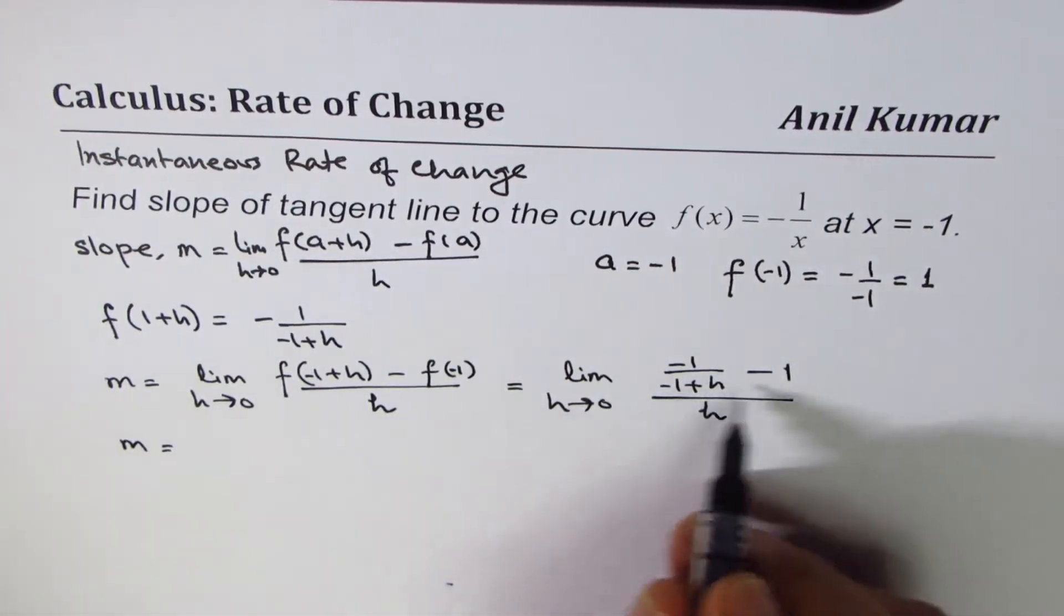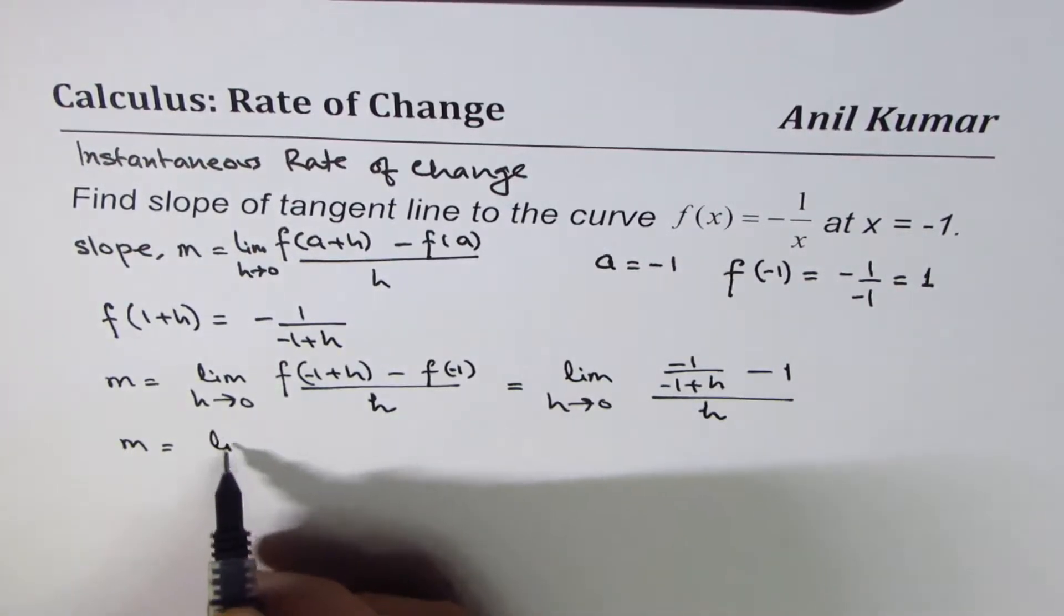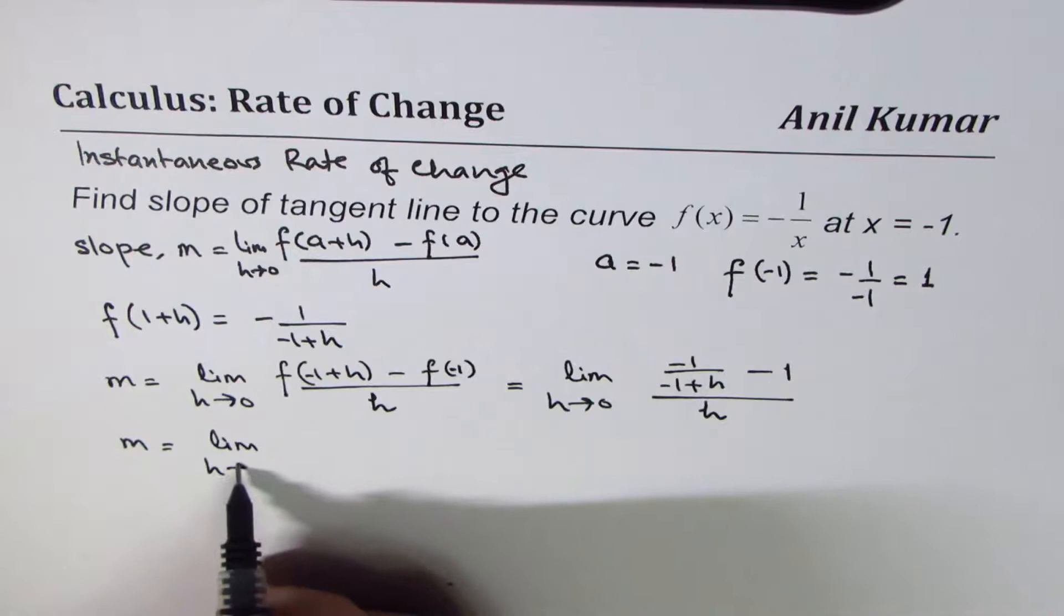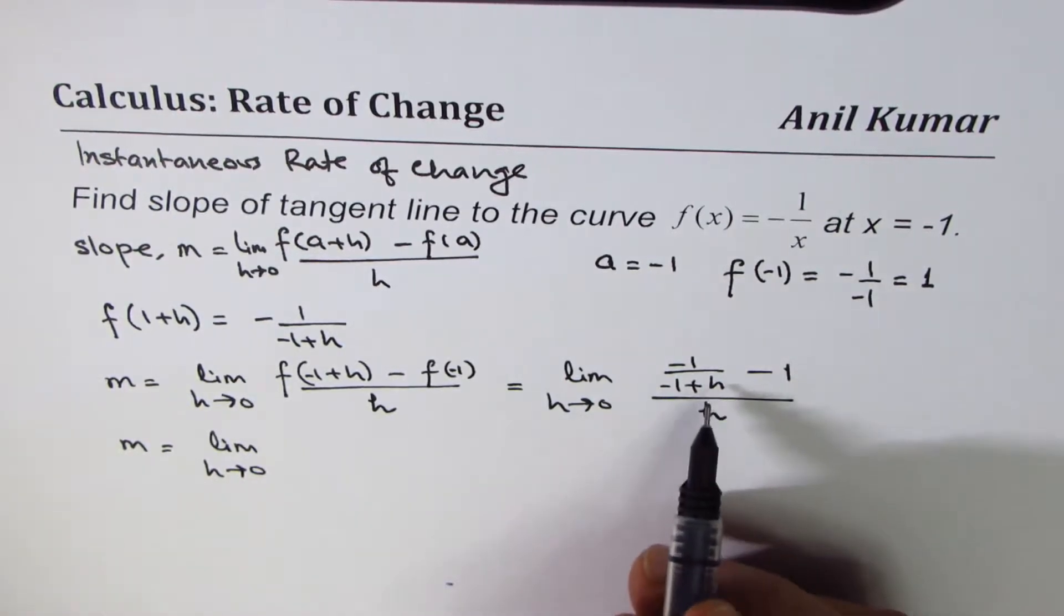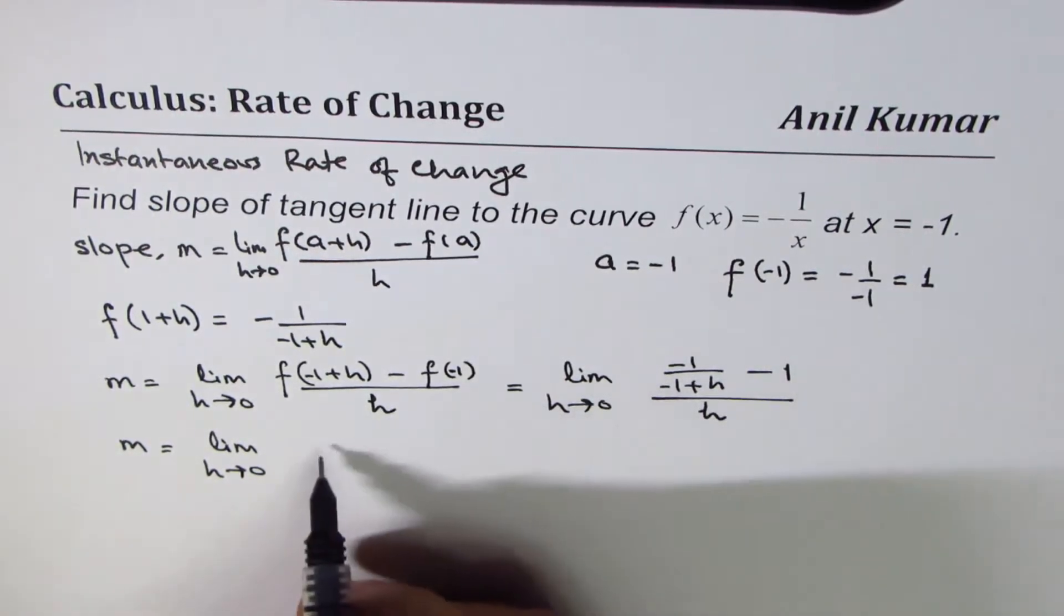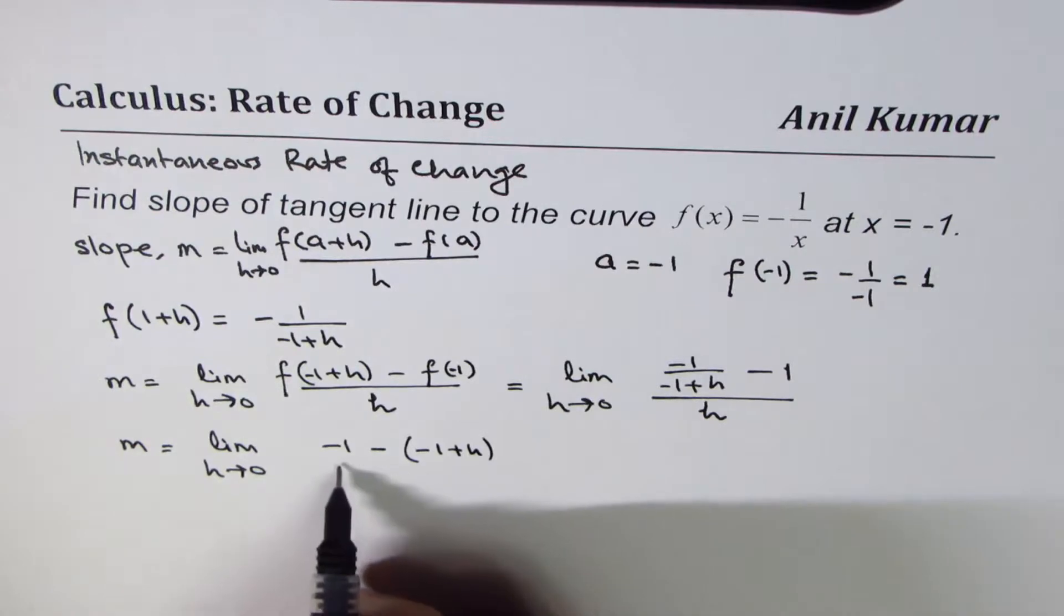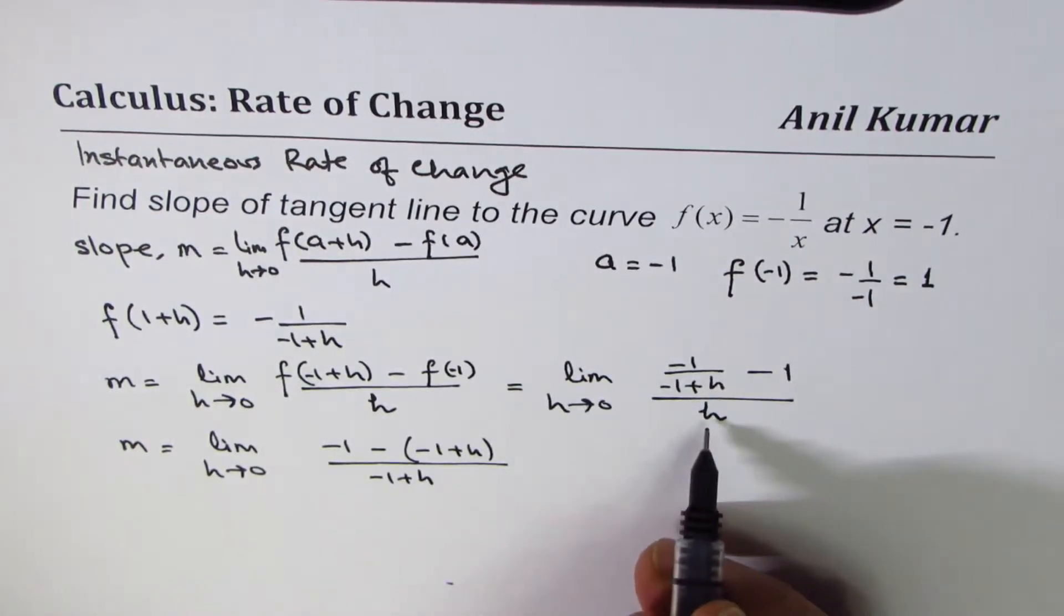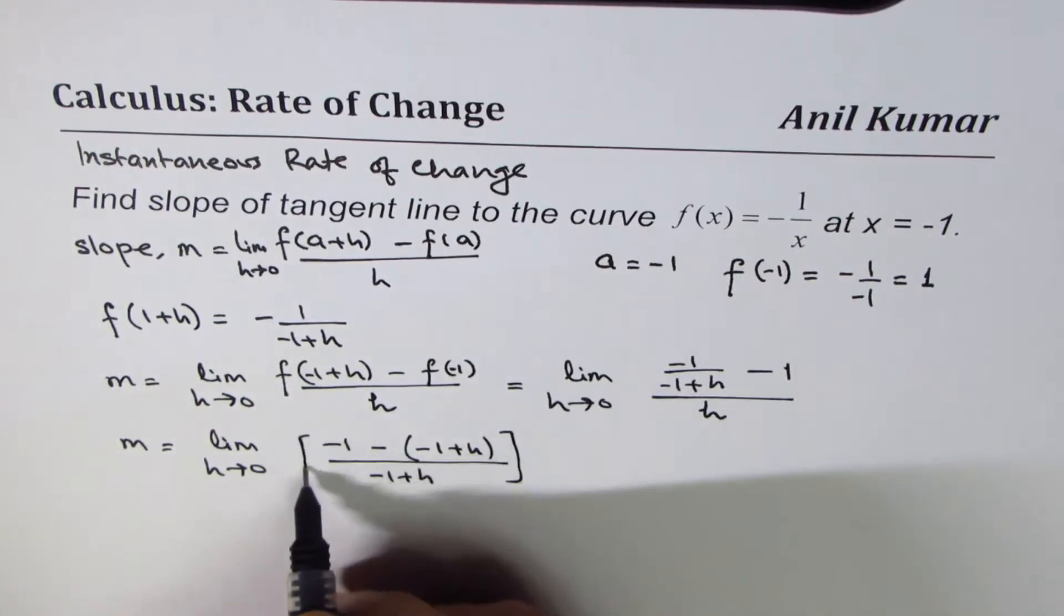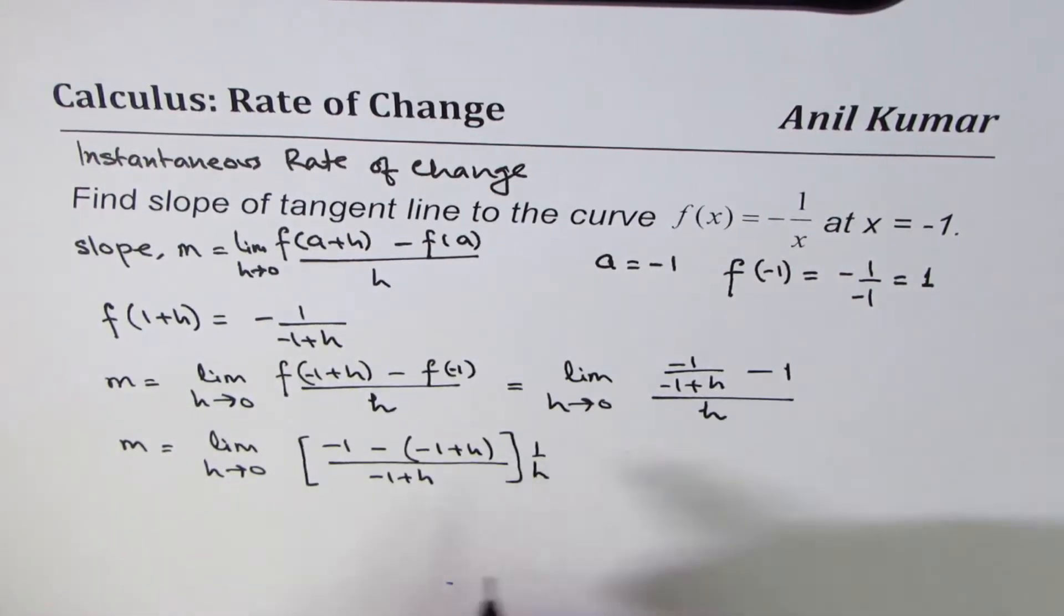Now, we can take common denominator. So we get limit h approaches 0. If I take common denominator, I get minus 1 minus minus 1 plus h, divided by minus 1 plus h. And this, I could write like 1 over h. Avoiding three layers of fractions.